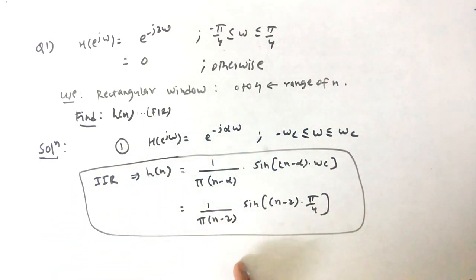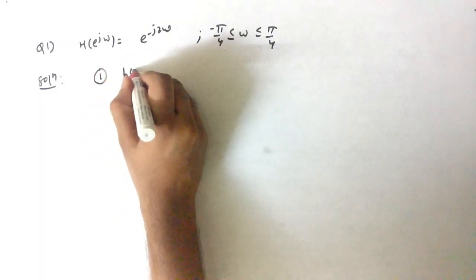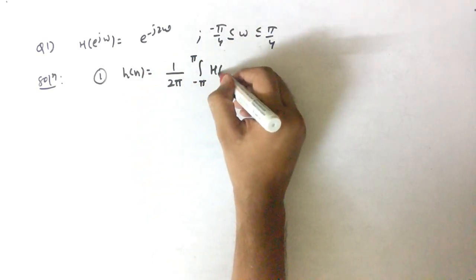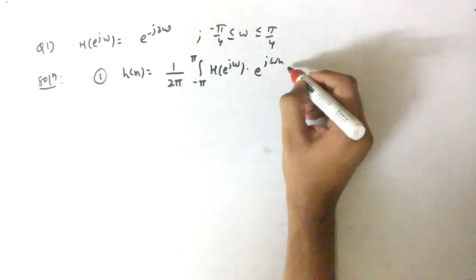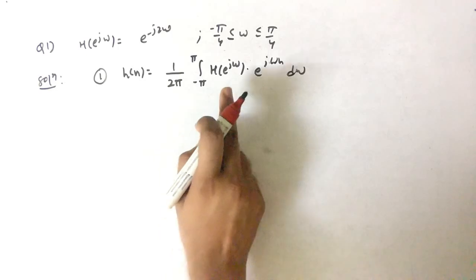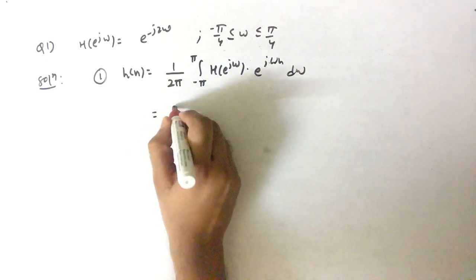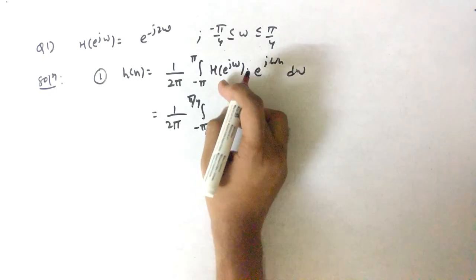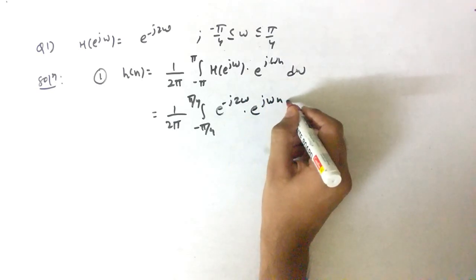Now let's solve and verify whether that answer is correct. The first step is to find h(n) using the IDFT: h(n) = (1/2π) ∫ from −π to π of H(e^jω) · e^(jωn) dω. Since the function is valid only between −π/4 and π/4 and zero otherwise, we change the limits to −π/4 to π/4. The function in that range is e^(−j2ω), so we integrate e^(−j2ω) · e^(jωn) dω.